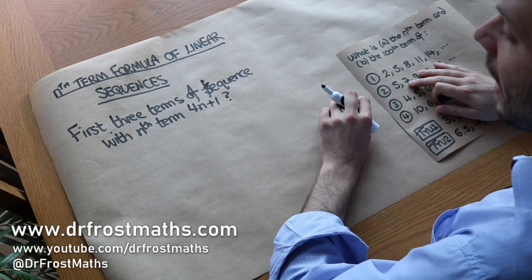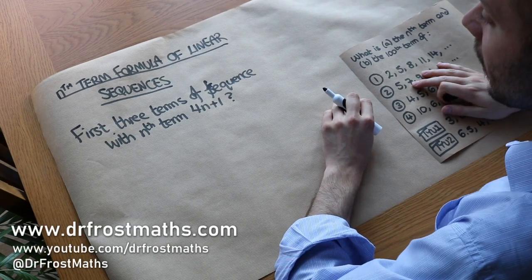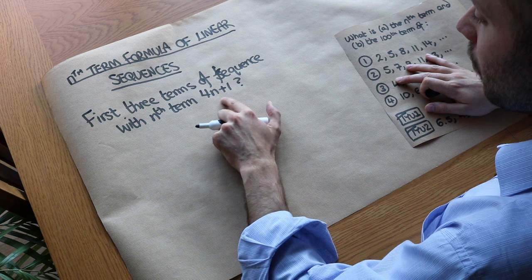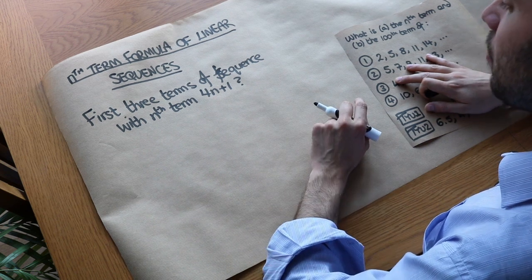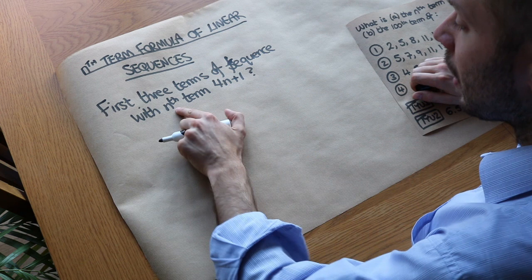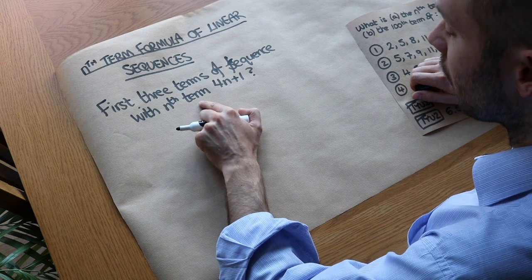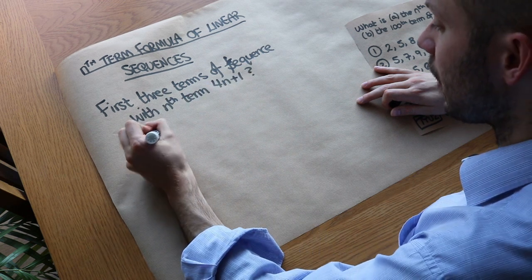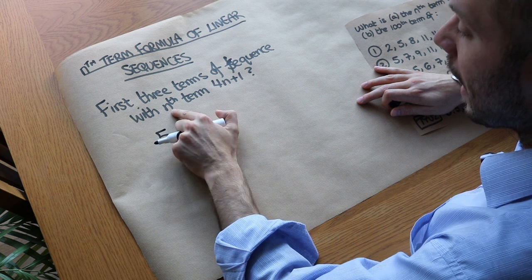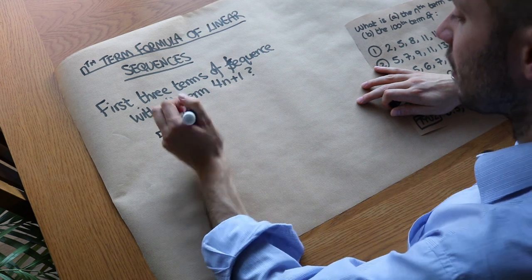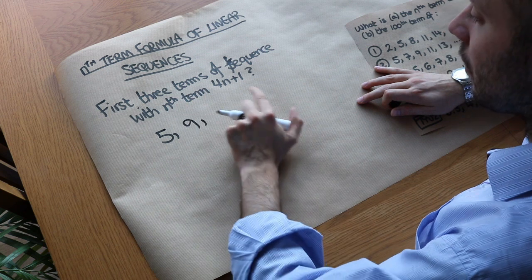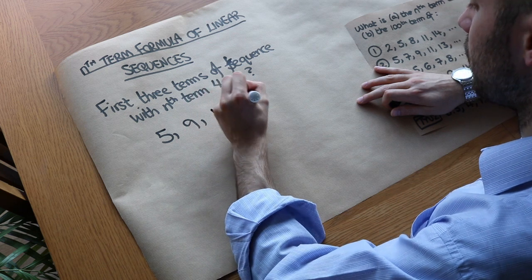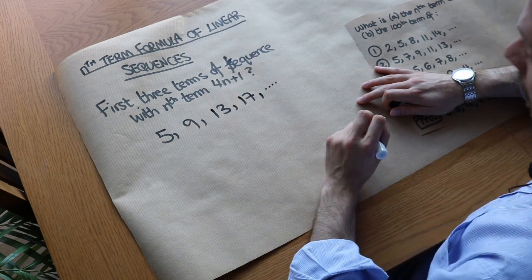Hello and welcome to this video on finding the nth term formula of a linear sequence. Just to recap, let's find the first three terms of the sequence with the nth term formula 4n plus 1, which we explored in a previous video. The first term, where n=1, is 4 times 1 plus 1 equals 5. The second term, where n=2, is 4 times 2 plus 1 equals 9. The third term, where n=3, is 4 times 3 plus 1 equals 13. We could get more terms in the same way for the fourth term, fifth term, etc.